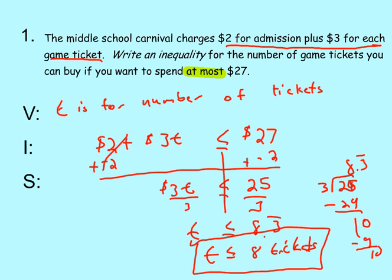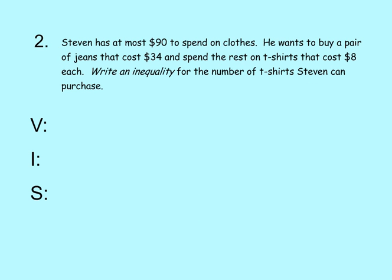Let's look at number 2. We start with our question and find our variable assignment. We want to figure out the number of t-shirts. So we will do T is for number of t-shirts. And then we look for our inequality phrase. Our inequality phrase is right here. I am going to highlight it. It is at most $90. We just used at most so we know that is less than or equal to $90.